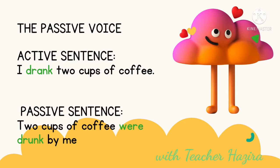But if you want to write in passive sentence, it will be the other way around. For example: 'Two cups of coffee were drunk by me.' Now the subject in this sentence is 'two cups of coffee.'